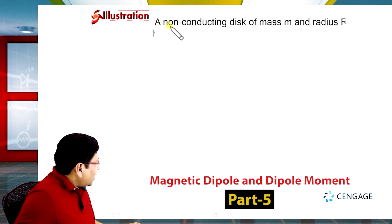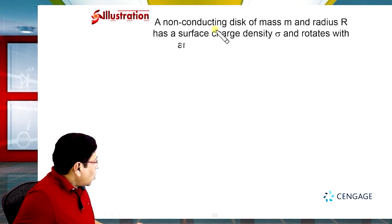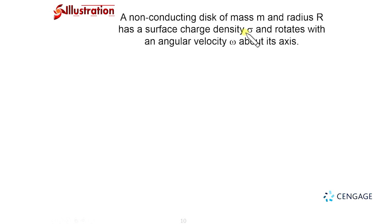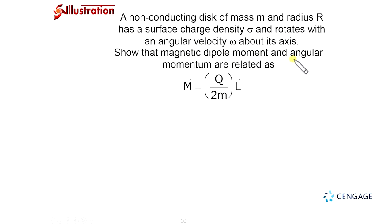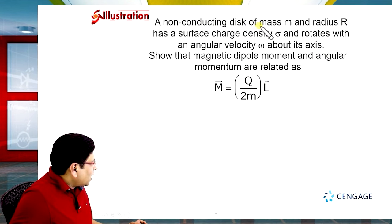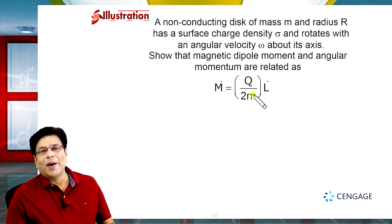In this illustration, a non-conducting disk of mass m and radius R has surface charge density sigma and rotates with angular velocity omega about its axis. We need to show that the magnetic dipole moment and angular momentum are related as m-vector equals q divided by 2m multiplied by L-vector, where m is the magnetic dipole moment vector, L-vector is the angular momentum vector, q is the total charge on the disk, and m is the mass of the disk.